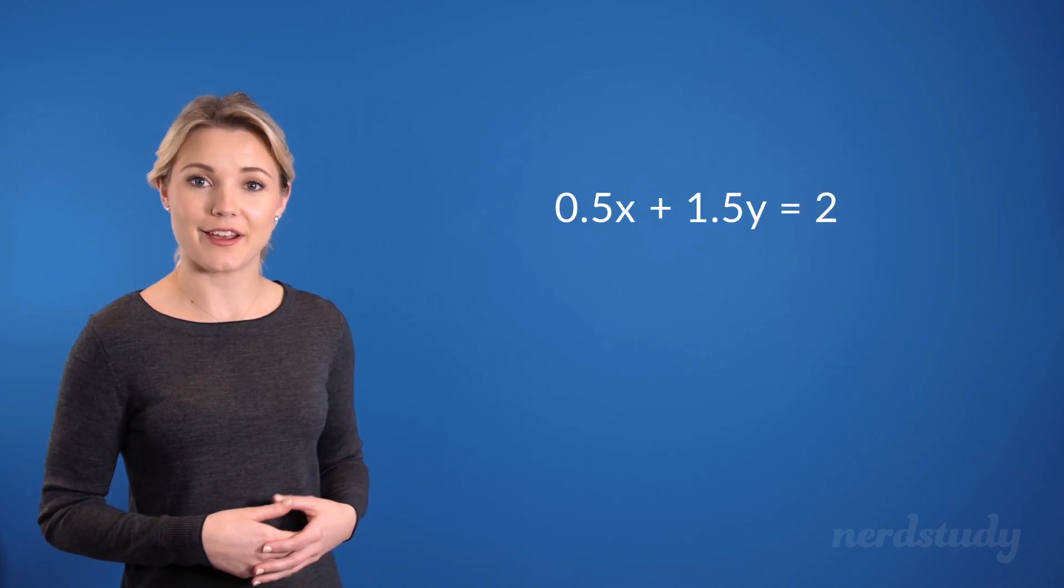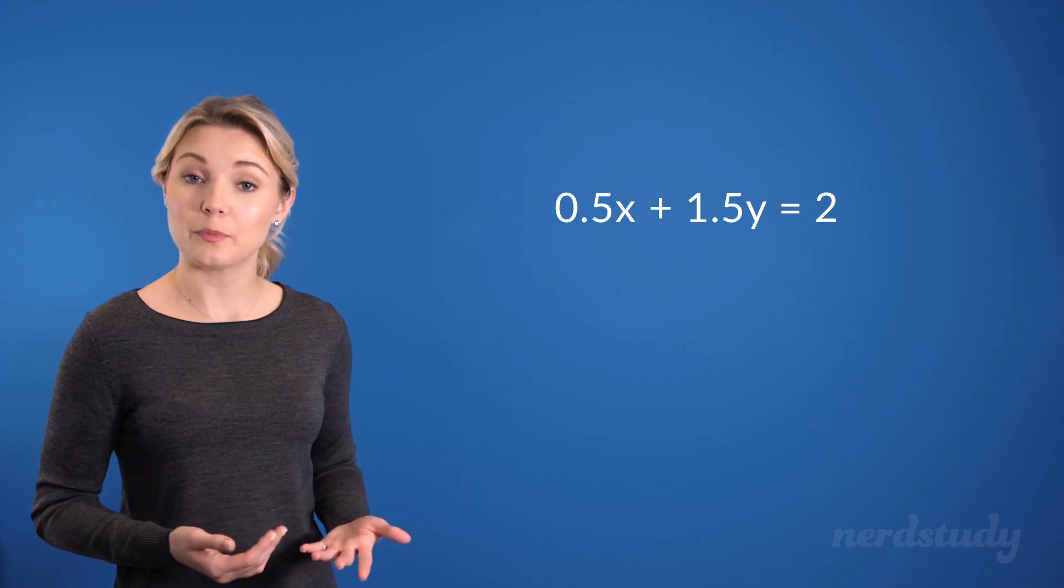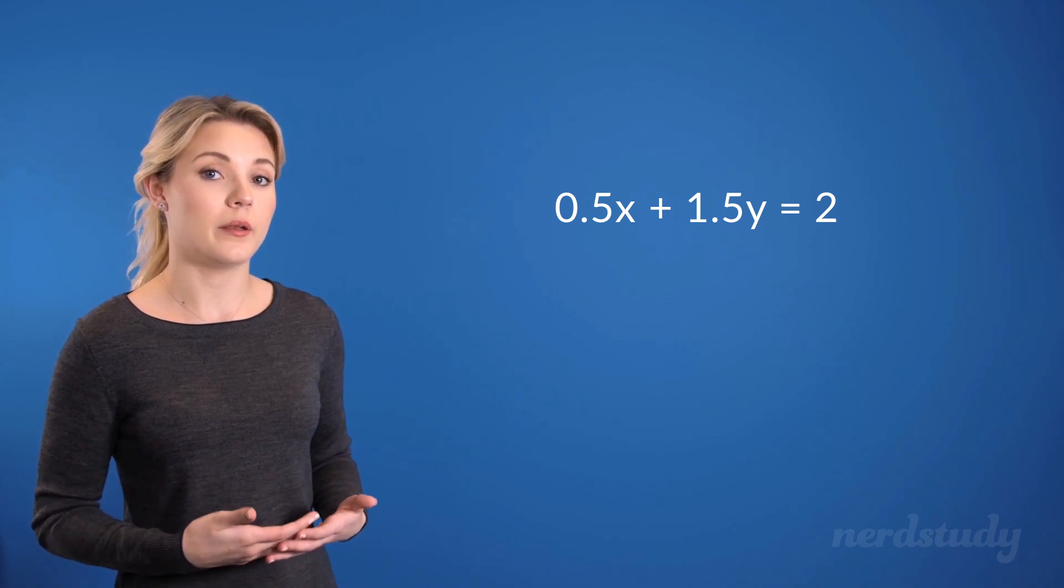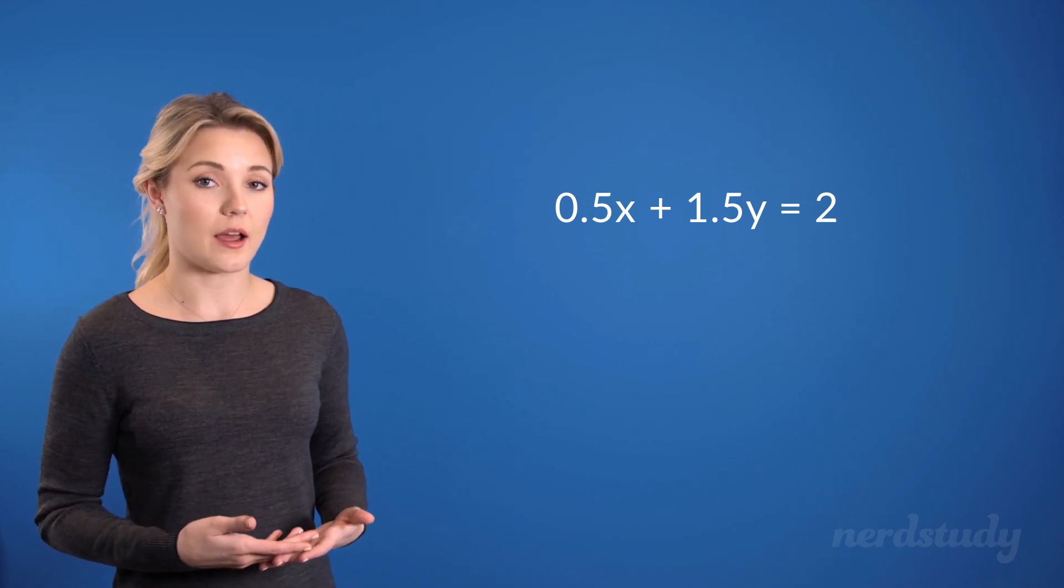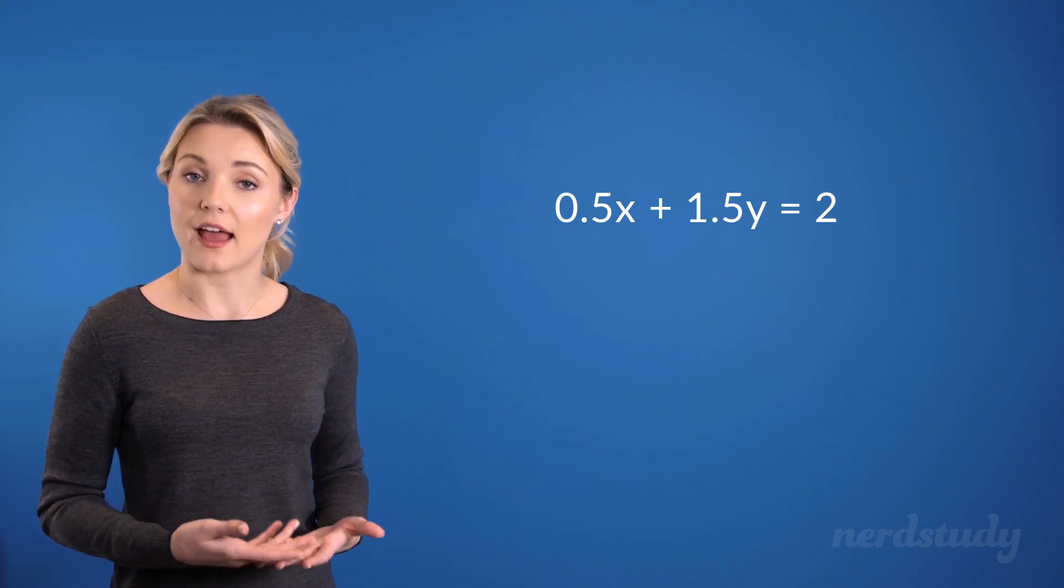Now, let's take a look at this following linear equation. Although this would express a linear equation, most people would multiply the entire equation by the least common multiple. This is the number that would take every term out of its decimal form and make it a natural number.